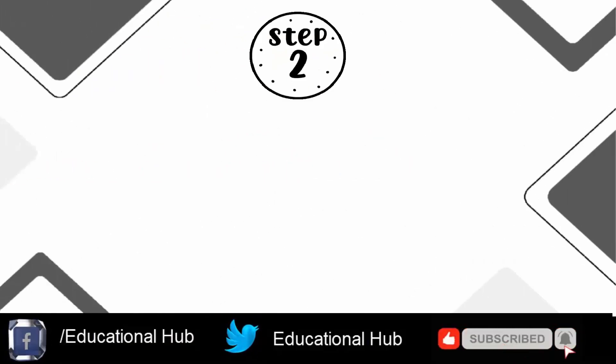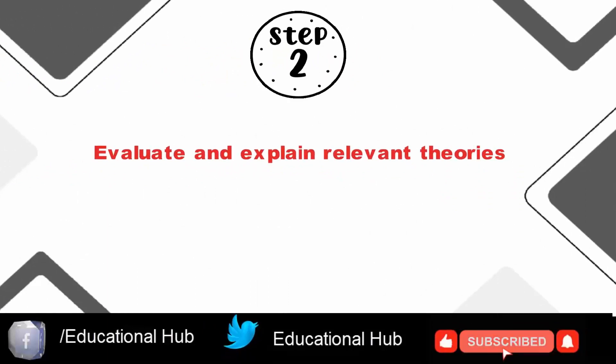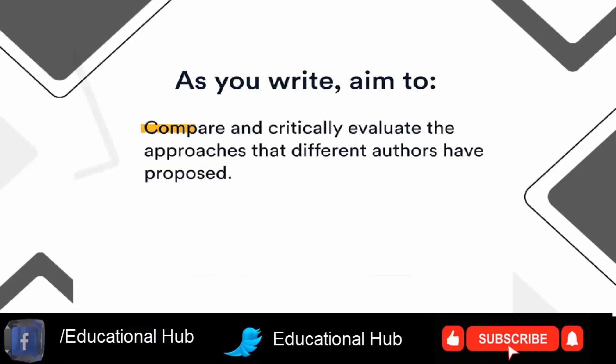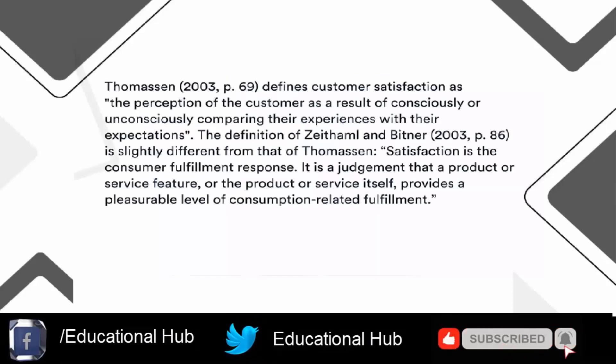Step 2: Evaluate and explain relevant theories. As you write the theoretical framework, aim to compare and critically evaluate the approaches that different authors have proposed. After discussing different models and theories, you establish the definitions that best fit your research and justify why this is the case.